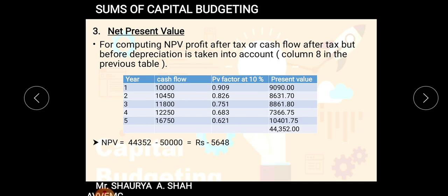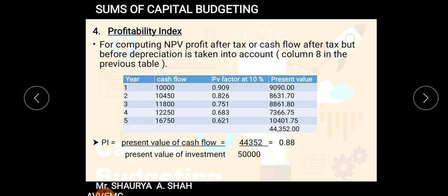No sound businessman can invest where they are getting a negative NPV. This indicates that if you invest 50,000 today, after five years you will be getting a return of only 44,352, which is a loss. Take the decision of accepting or rejecting the project accordingly. If you are clear with NPV, the Profitability Index (PI) is also straightforward. PI uses the same column — cash flow after tax but before depreciation — and the same calculations.